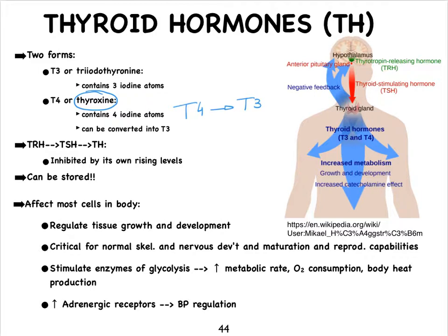Thyroid hormone is regulated by thyroid-stimulating hormone from the anterior pituitary, which in turn is controlled by thyroid-releasing hormone from the hypothalamus. When thyroid hormone levels begin to rise, they feed back negatively to the hypothalamus and the pituitary. What's interesting and unique about thyroid hormone is that it can be stored.